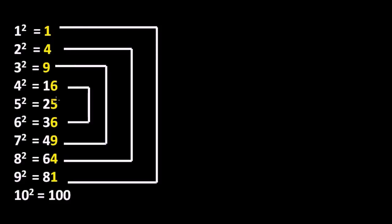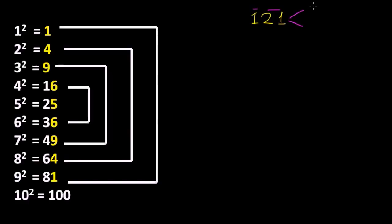So let us begin with 121. We have to make pairs like that. Now we have to focus on the unit place of this number, which is 1. You can see here 1 is the unit digit for the square of 1 and also for the square of 9. So I must write the pair as 1 and 9.